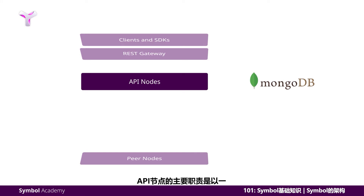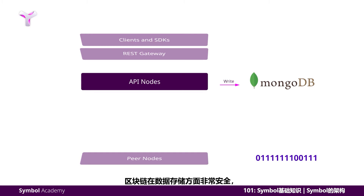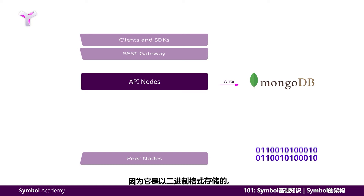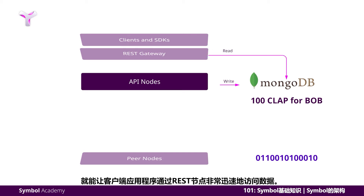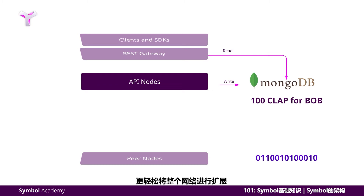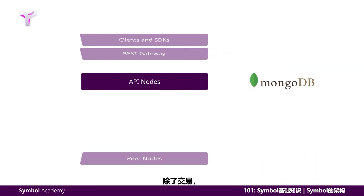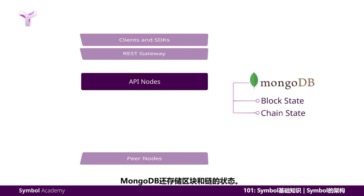The primary responsibility of the API nodes is to store the data in a readable form in MongoDB. Blockchains are a secure method of data storage, but they're not the most efficient in terms of data retrieval because it is stored in a binary format. Replicating and storing data in MongoDB allows the client apps to access the data very quickly through the REST nodes. Importantly, this allows for more efficient and easier scaling of the entire network. Other than transactions, MongoDB also stores blocks and chain states.